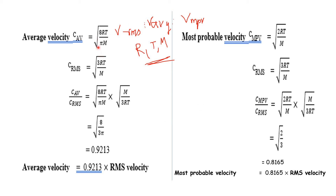The average velocity formula is the square root of 8RT divided by πm. The root mean square velocity formula is the square root of 3RT divided by m.